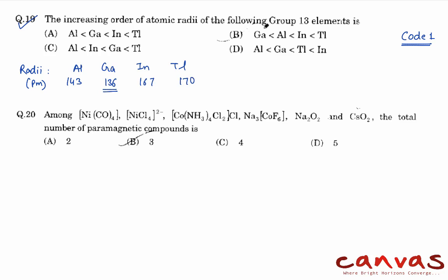So the answer is gallium, then aluminium, indium, thallium. Answer is B. Now the next question: among NiCO4, NiCl4, we have been given some coordination compounds and peroxide and superoxide.